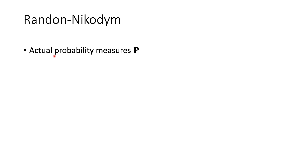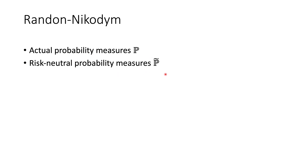To talk about change of measure, we first need to introduce the concept of the Radon-Nikodym derivative. We have the actual probability measure — the probabilities in the real world — and we also have the risk-neutral probability measure. We already saw this when studying the one-period binomial asset pricing model. P-tilde is just a function of r (the interest rate), d (the down factor), and u (the up factor).